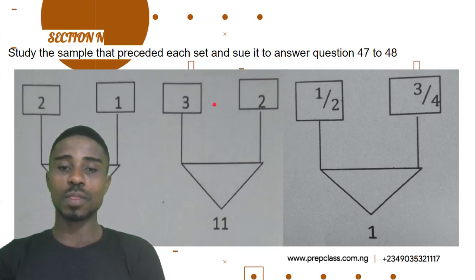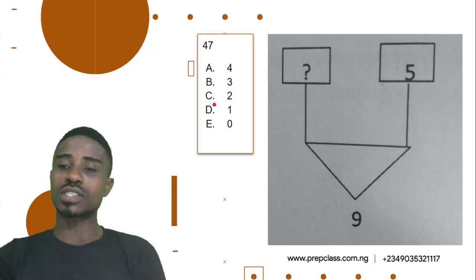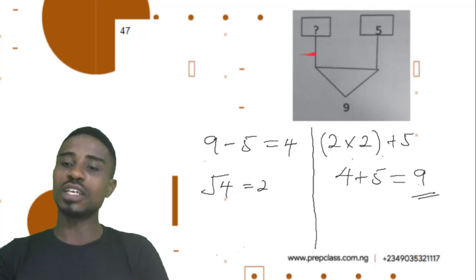Alright, let's proceed. Question 47, we've been asked to find this. Let's see how to get it done. Definitely, we know it is 9 minus 5 will give us the answer 4. Then the square root of 4 will give us 2. So our answer here would be 2.